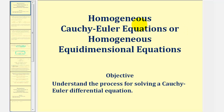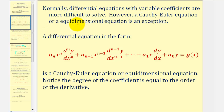Welcome to a lesson on homogeneous Cauchy-Euler equations, also called homogeneous equidimensional equations. The objective of this video is to understand the process for solving a Cauchy-Euler differential equation. Normally, differential equations with variable coefficients are more difficult to solve. However, a Cauchy-Euler equation or equidimensional equation is an exception, which we'll see in this video.